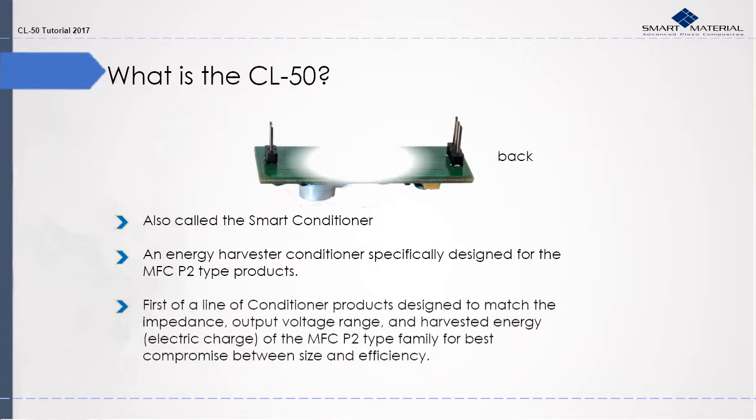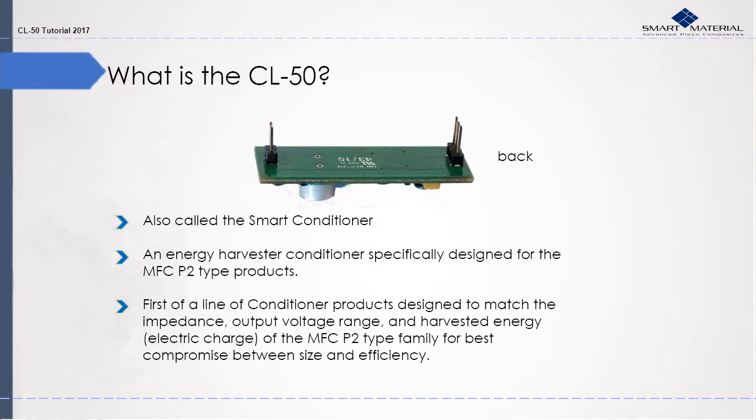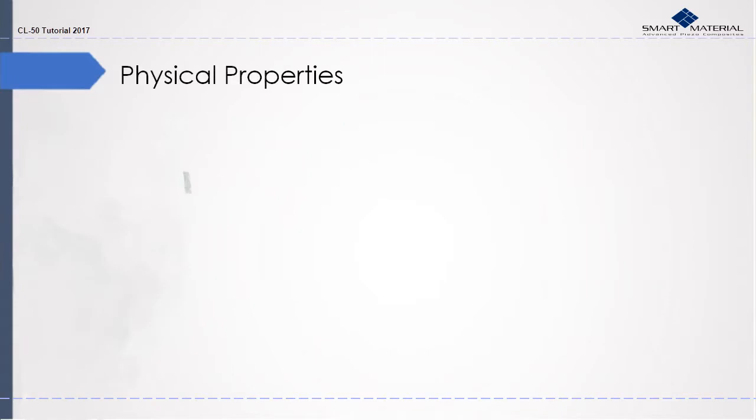It is the first of a line of conditioner products designed to match the impedance, output voltage range, and harvested energy of the MFC-P2 type family for best compromise between size and efficiency. The CL-50 is a relatively small module designed to be both efficient and mobile.